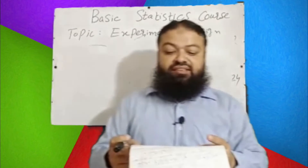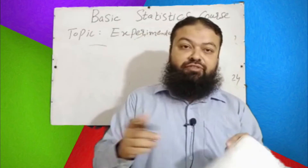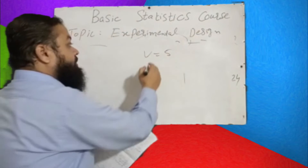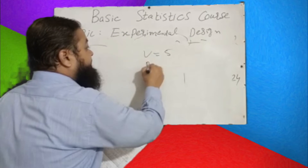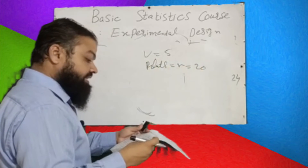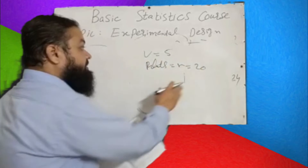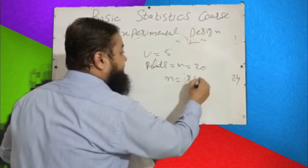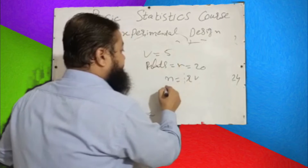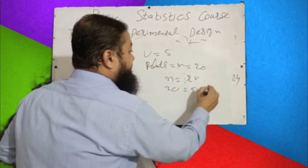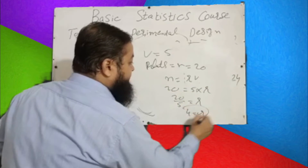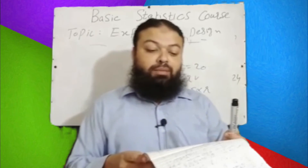Question number ten: In a Randomized Block Design there are 5 treatments (v = 5) and 20 total plots (n = 20). Then the number of replications for the third treatment will be: using the formula n = r × v, we get 20 = r × 5, so r = 20 / 5 = 4. The correct answer is 4 replications for the third treatment.